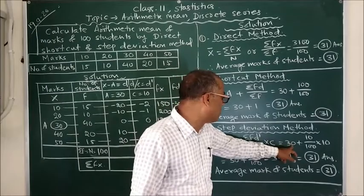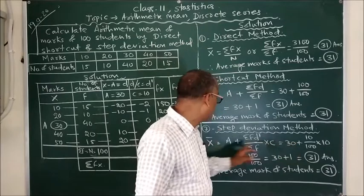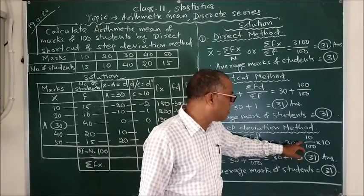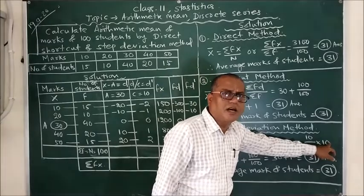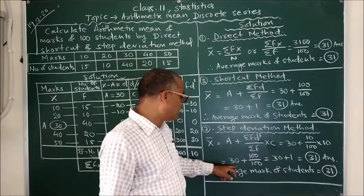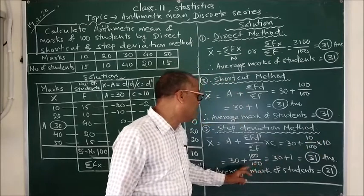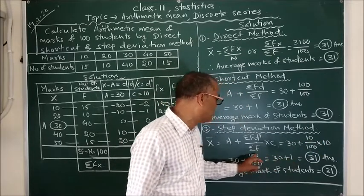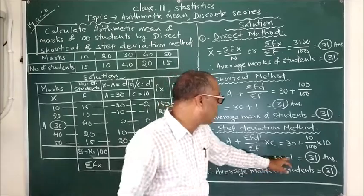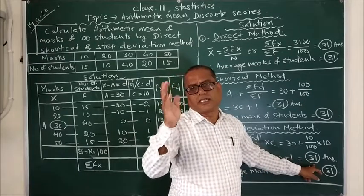Replacing the value we found the equation to be x bar equals 30 plus 10 upon 100 into 10, where 10 is the common factor. The equation became 30 plus 100 upon 100, which equals 30 plus 1. Again we got the same answer, 31.